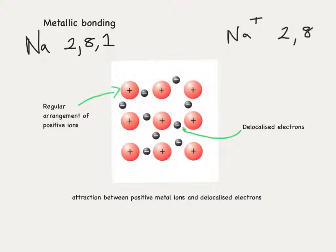The metallic bond then is the attraction between the positive metal ions and the delocalised electrons from the metal.